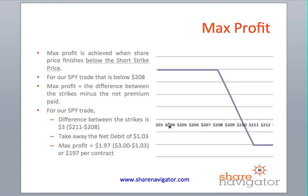The maximum profit is achieved when the share price finishes below $208. Below that level, you can only make a fixed amount — no more. Max profit is calculated as the difference between the two strike prices minus the net debit paid. For our SPY trade: $211 minus $208 equals $3, minus $1.03 net debit, giving a maximum profit of $1.97 per share, or $197 per contract.